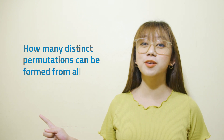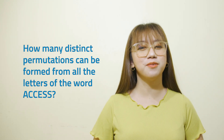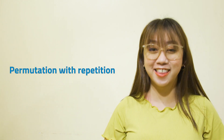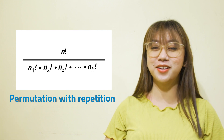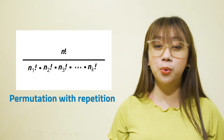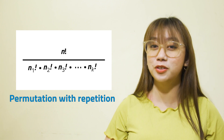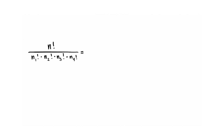How many distinct permutations can be formed from all the letters of the word axis? For this problem, we need to use the permutation with repetition formula. If among n objects, n₁ are alike, n₂ others are alike, n₃ others are alike, and so on, then the number of distinct permutations taken all together is n! / (n₁! × n₂! × n₃! × … × nₖ!). The word axis has 4 letters: 2 S's, 1 A, and 1 I. Then n = 4, n₁ = 2, n₂ = 1, n₃ = 1.